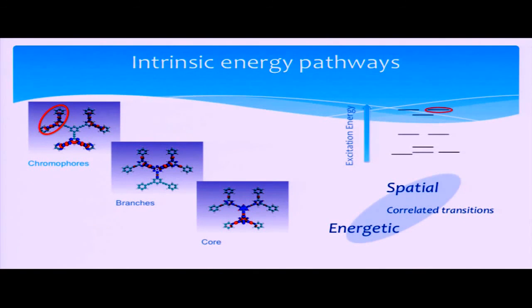And what we found is that, in certain types of dendrimer structures, this natural energy pathway is actually an intrinsic property arising from the structure itself. You can see here that, similar to in the light harvesting complex, we have localized excitations at higher energy around the periphery of the structure.